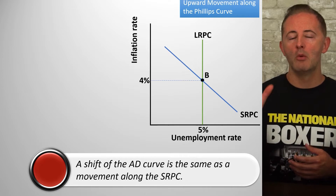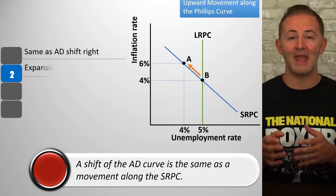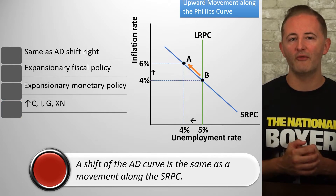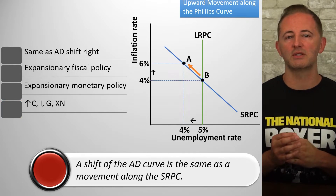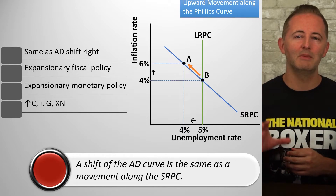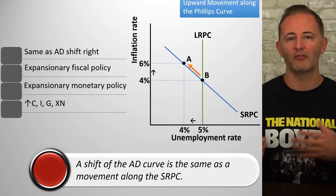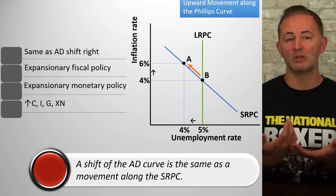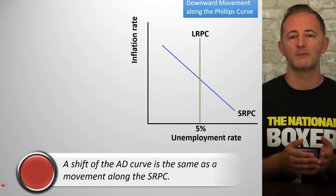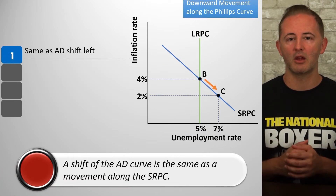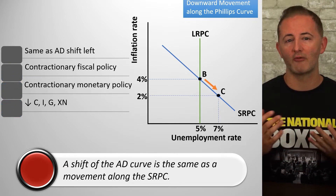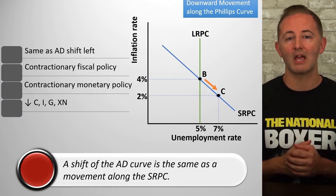Just to recap: movements along the SRPC are the same as shifts of the AD curve and share the same determinants. Here are the factors that cause an upward movement along the SRPC — the same exact things that shift the AD curve to the right. And downward movements along the SRPC are the same as AD curve shifts to the left, caused by contractionary policy — both fiscal and monetary — as well as anything that decreases consumer, investment, or government spending, or decreases net exports.